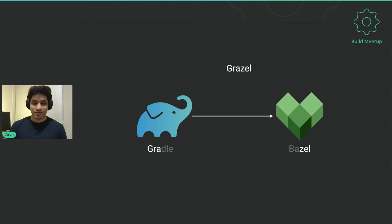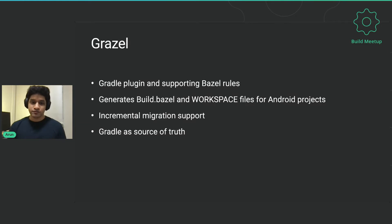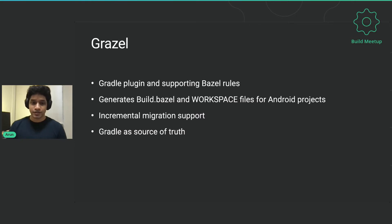Grazel simply stands for Gradle to Bazel — taking the prefix and suffix from both words. I'm really excited to talk about the architecture, the design decisions, and the results, and we have some announcements at the end. Grazel is primarily a Gradle plugin with a Bazel rules component developed to support the migration. At its core, it generates build.bazel and workspace files for Android projects by looking at Gradle source information and generating valid build.bazel and workspace files in an automated fashion, supporting incremental migration.